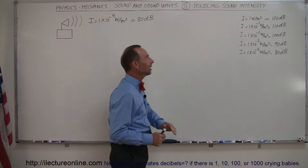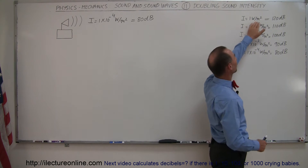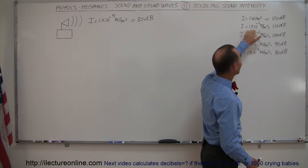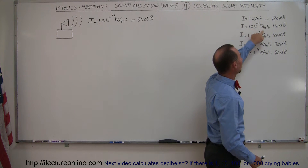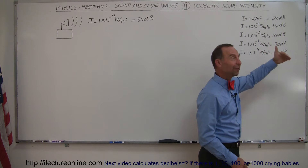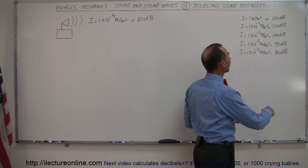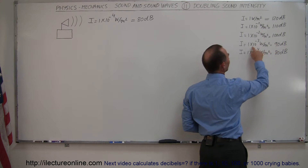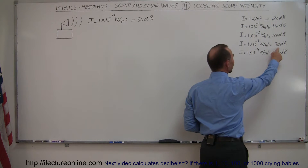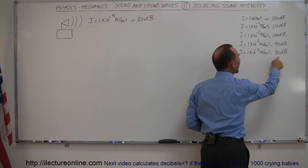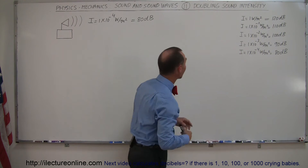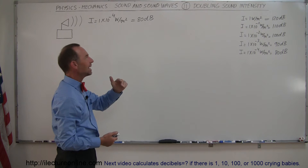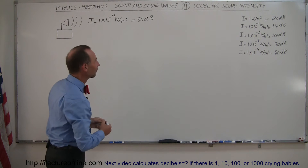If you didn't quite get it that quickly, go back. You know that 1 watt per square meter is 120 decibels. You just decrease it by 10 decibels for each power of ten: 1 times 10 to the minus 1, decrease by 10; 1 times 10 to the minus 2, decrease by 10 again; 1 times 10 to the minus 3 is 90 decibels; 1 times 10 to the minus 4 is 80 decibels. So I do that quickly — 120, 110, 100, 90, 80 — that's how you can look at that.